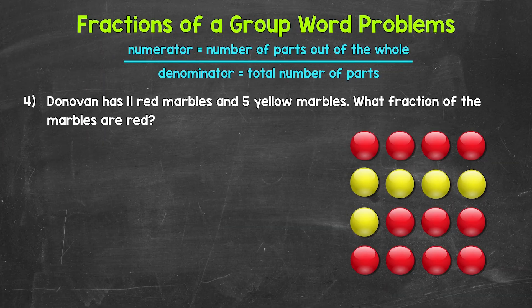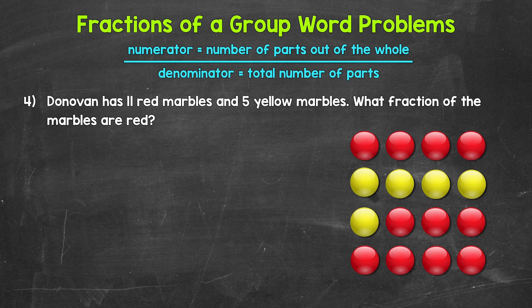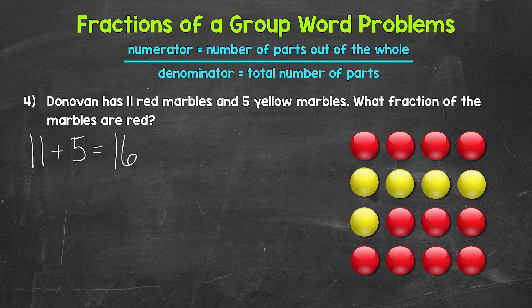Let's move on to number four. Taking a look at number four, we have Donovan has 11 red marbles and 5 yellow marbles. What fraction of the marbles are red? Let's start with the denominator. So we need the total number of marbles here. Now the problem doesn't directly tell us how many marbles Donovan has. But we can figure it out with the information that was given. He has 11 red marbles and 5 yellow marbles. So let's add those to see how many marbles he has in total. 11 plus 5 gives us 16. So Donovan has 16 marbles in total. That's our denominator.